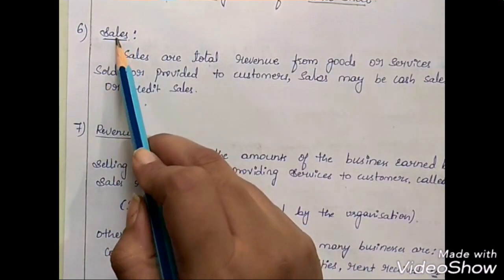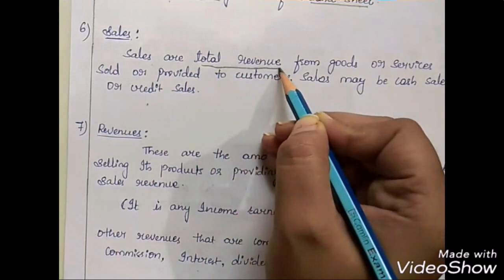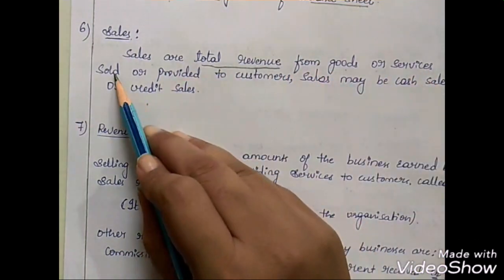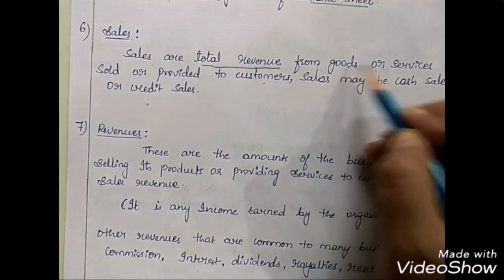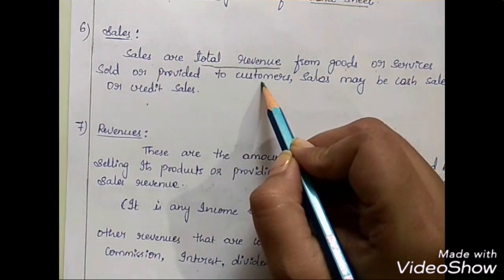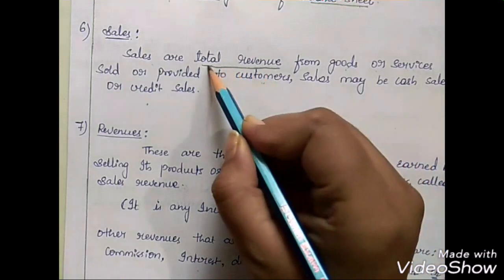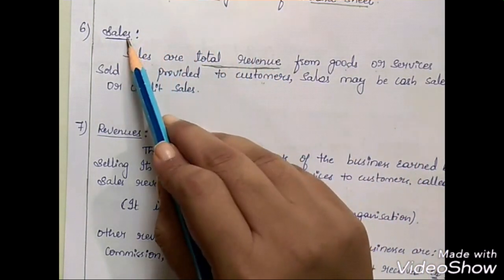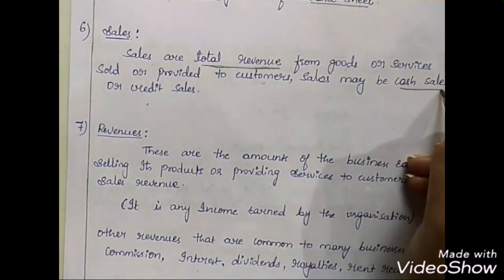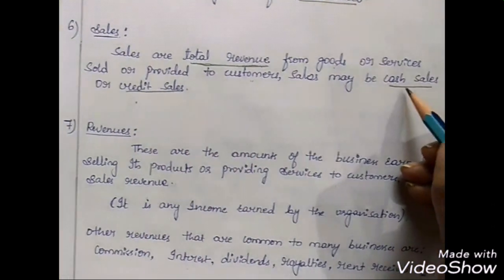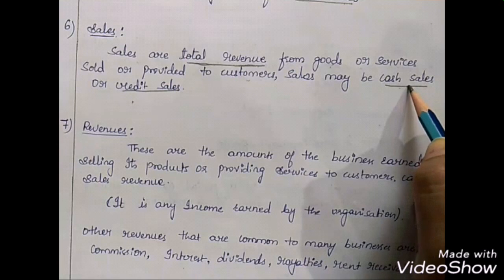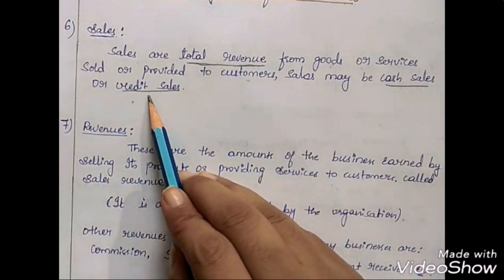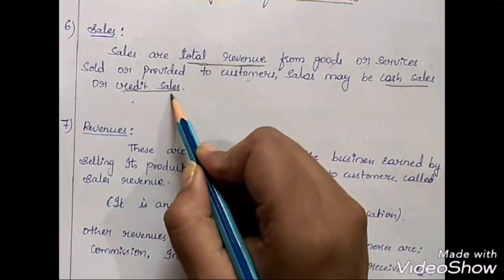Next is sales. Sales are the total revenue from goods or services sold or provided to customers. When a company makes sales or provides services, it receives income known as sales revenue. Sales may be cash sales — where the amount is immediately received — or credit sales, where the amount is promised to be paid in future days.